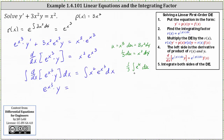One third times the integral of e to the u with respect to u equals one third e to the u plus c, which means with respect to x we have one third e to the x cubed plus c. The last step is to solve for y by dividing both sides by e to the power of x cubed.